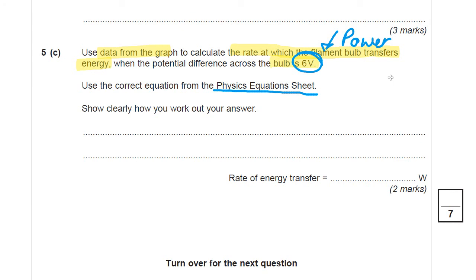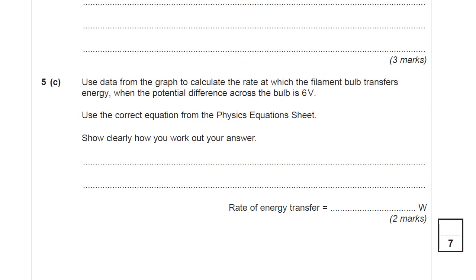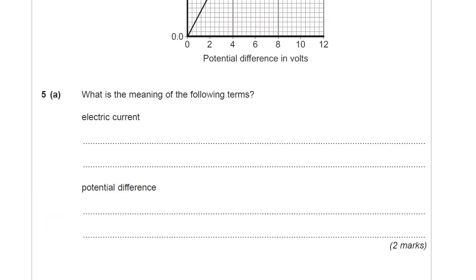So I hope you found from the equation sheet that power is current times voltage, or potential difference. Power is current times potential difference. I'm going to go to the graph and I'm going to do this question on the graph. The clue also was down there, wasn't it, that what is the unit of power?